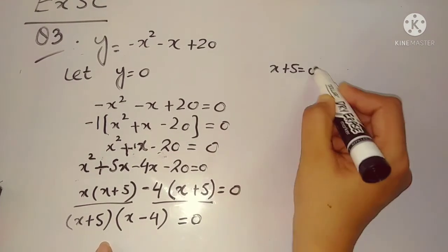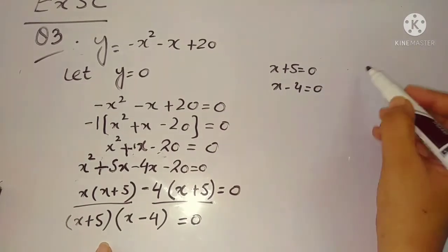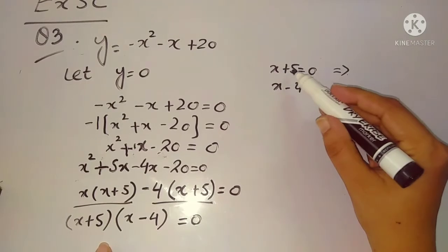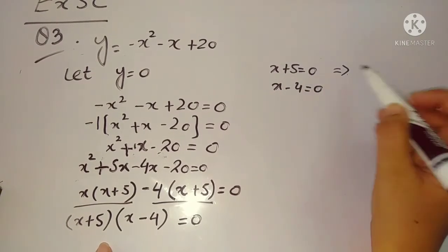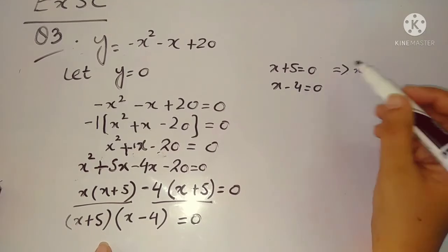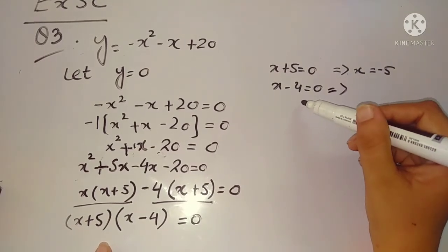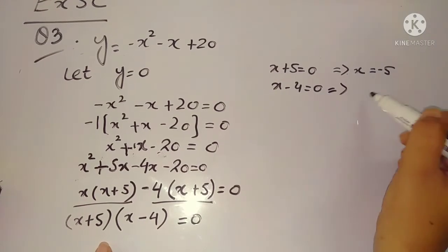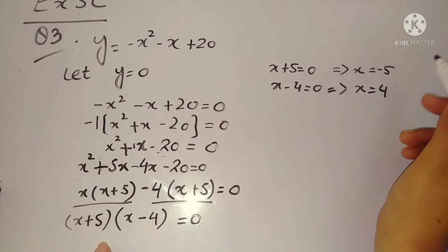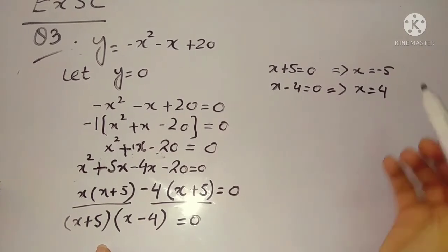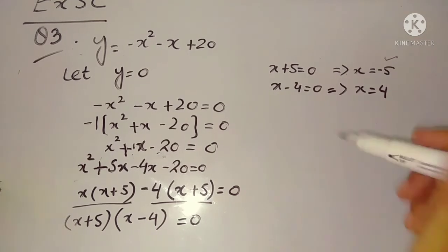When writing the factors in place of the middle term, follow two rules: first, write down the sign of the middle term — it is plus, so write plus. Write the bigger factor first: 5x. Then decide the other sign so that the result is 1. Since 5 - 4 = 1, the other sign should be minus. So we get: x² + 5x - 4x - 20 = 0.